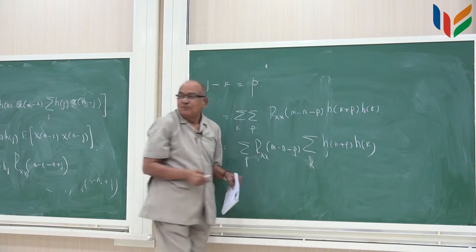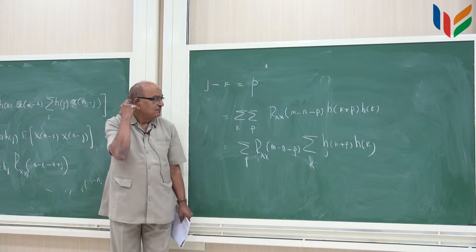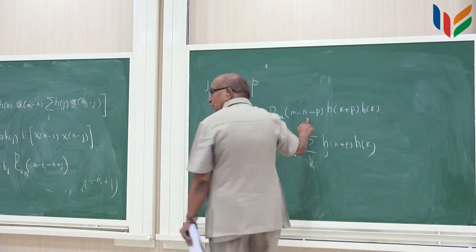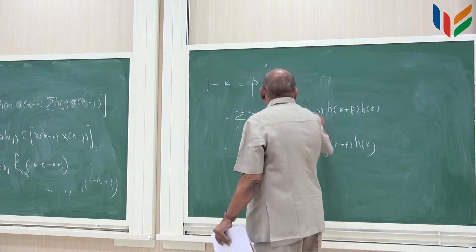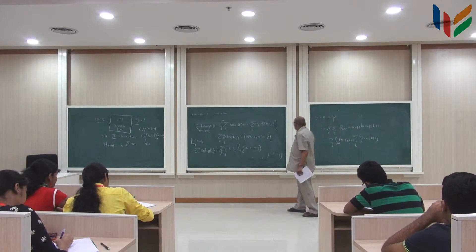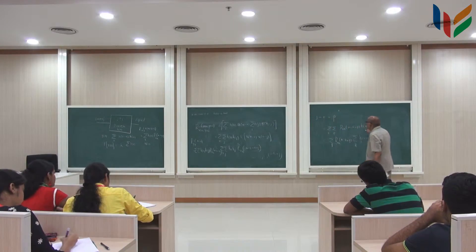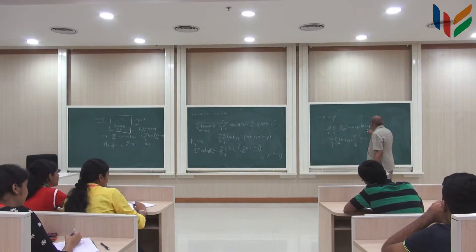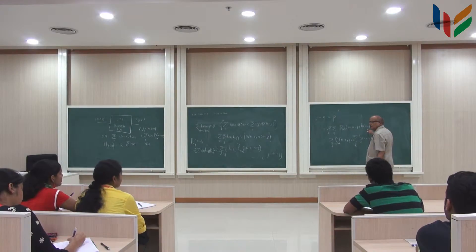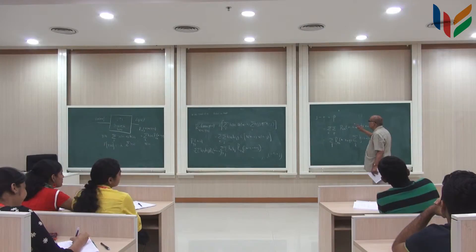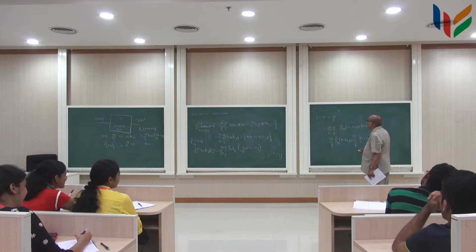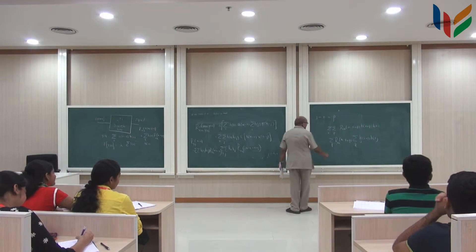First sum on k. Sir, rxx m minus n plus p. Sir, rxx m minus n plus p, are you sure? Okay. And what about this? h k is okay. h j is equal to, what is g equal to? k plus p. Okay, that is okay. Is that all right?